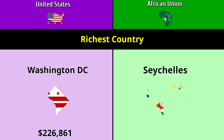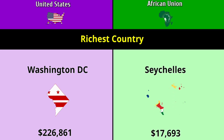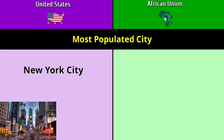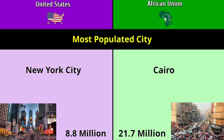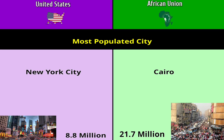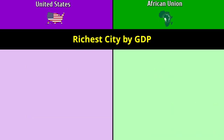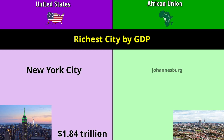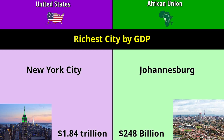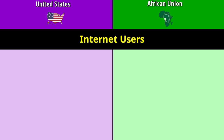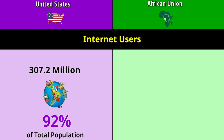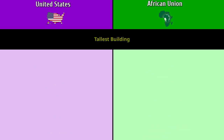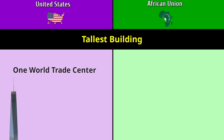Most populated city: New York City at 8.8 million versus Cairo at 21.7 million. Richest city by GDP: New York City at 1.84 trillion dollars versus Johannesburg at 248 billion dollars. Internet users: 307.2 million versus 449 million.